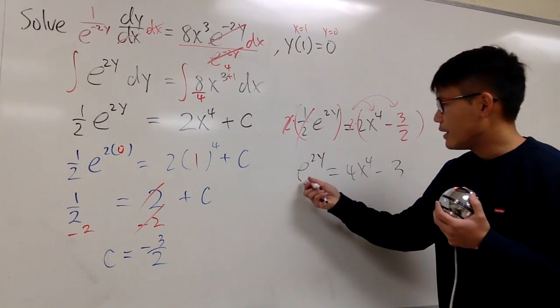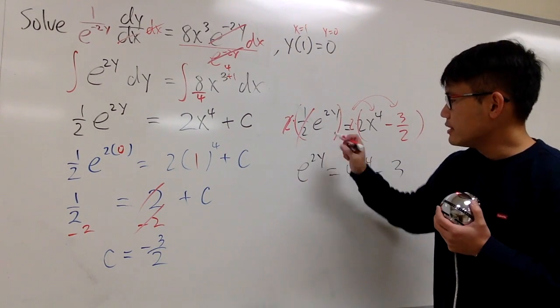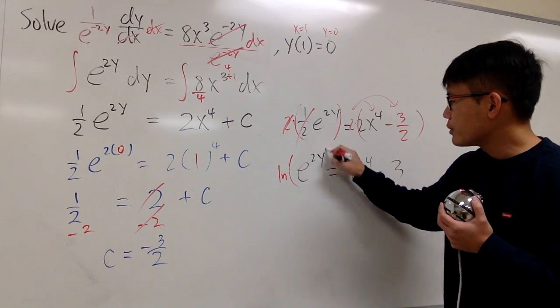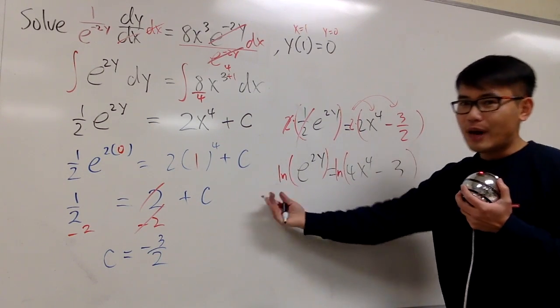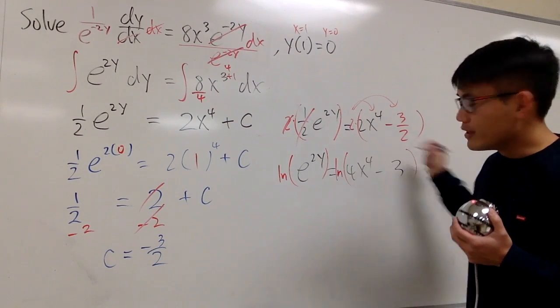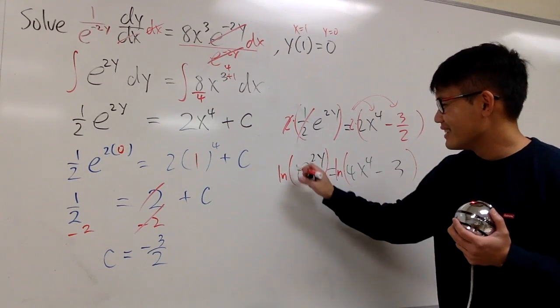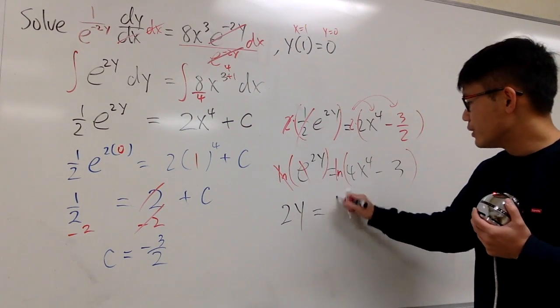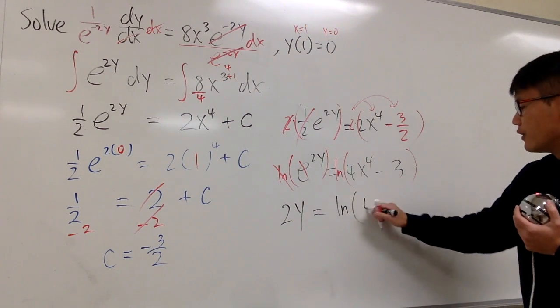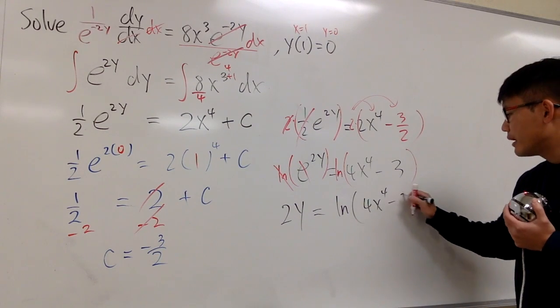I need to get rid of the e. The y is in the power. So let's go ahead and take the ln on both sides. And I'm not integrating. This is just a regular ln both sides situation. No absolute value. Anyways, they cancel. And then we will have 2y equals ln of 4x to the 4th power minus 3.